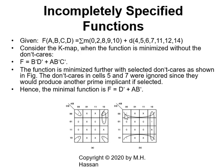However, if I allow myself to use don't cares, I can take a group of 8 — those don't cares here form a group of 8 — and this one with this one and a don't care gives a group of four. The group of 8 gives D' because everything cancels on the horizontal axis. The group of four gives AB', as everything cancels on the vertical axis. So F, the minimized function utilizing don't cares, is D' or AB'.